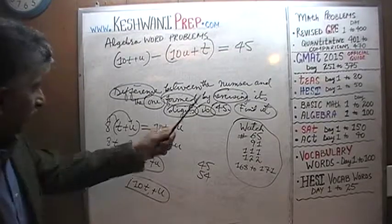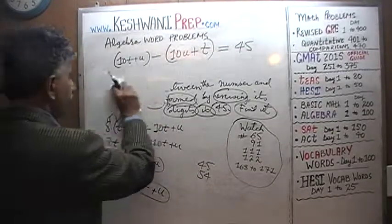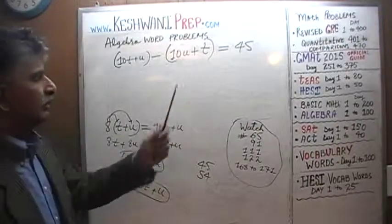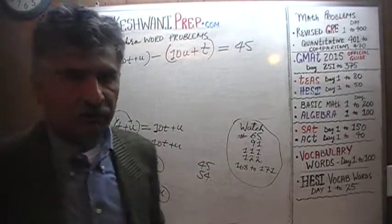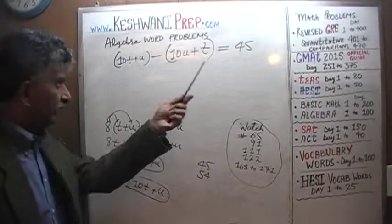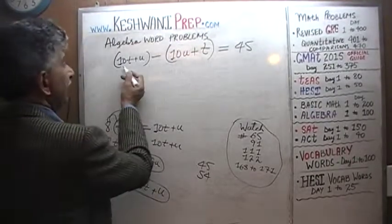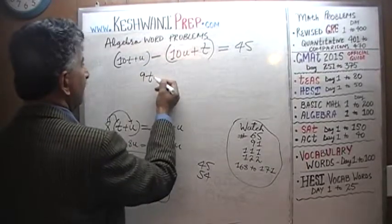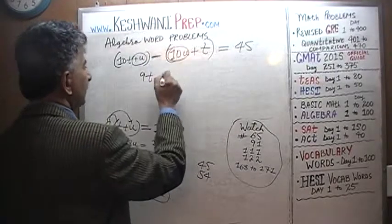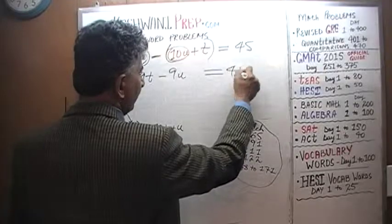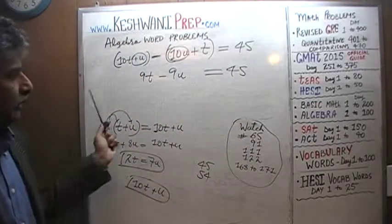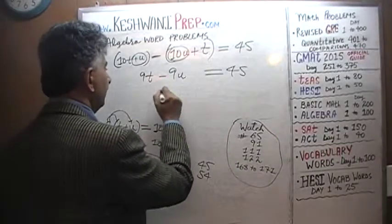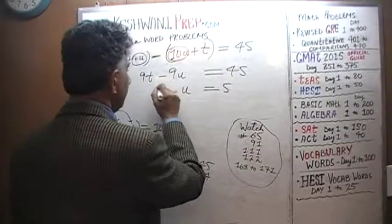As you can see, the whole equation is a multiple of 9 — this is standard for problems of this nature. Dividing the entire equation by 9: T minus U equals 5. Now we have our two equations: 2T equals 7U, and T minus U equals 5.